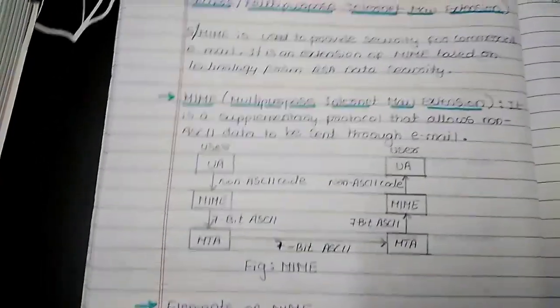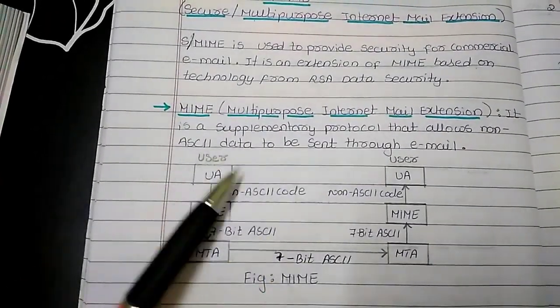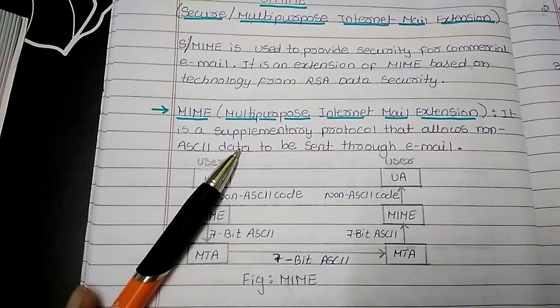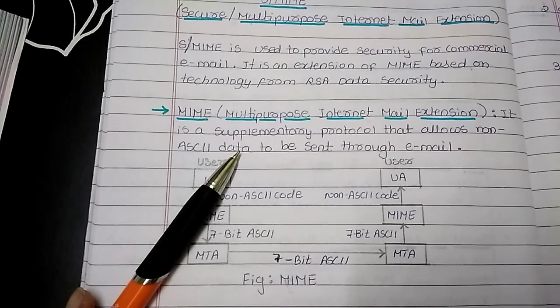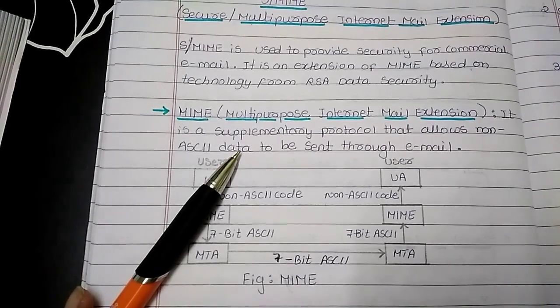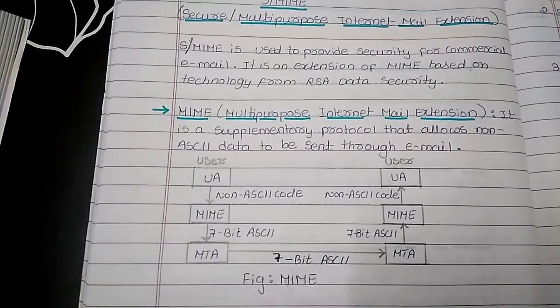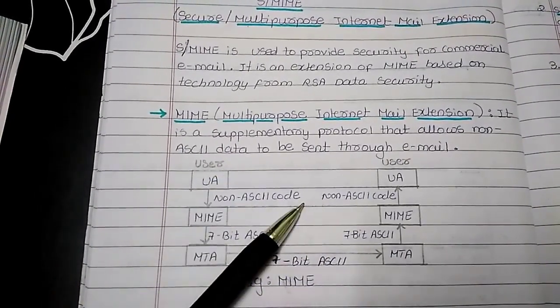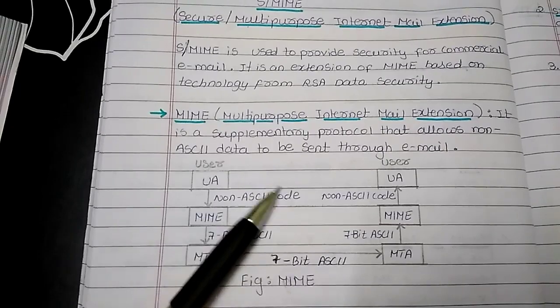So this is MIME or multipurpose internet mail extension. Basically, it is a set of software functions which transform non-ASCII data to ASCII data and vice versa. It is a supplementary protocol that allows non-ASCII data to be sent through email.